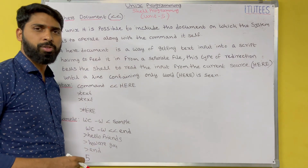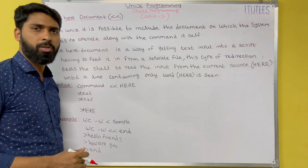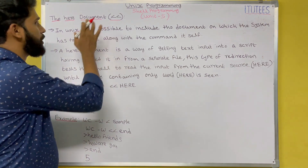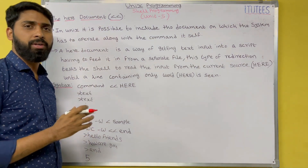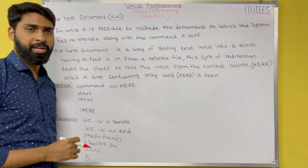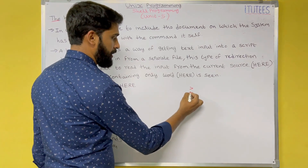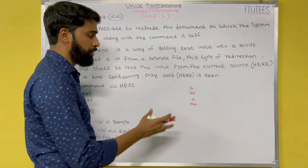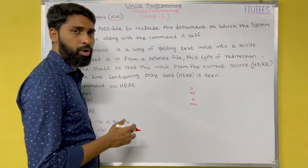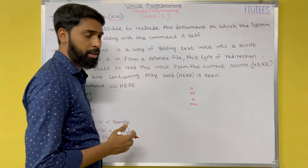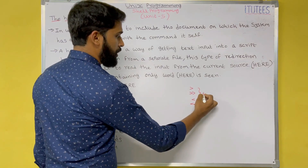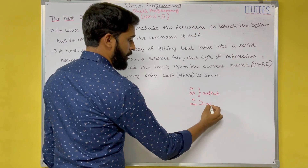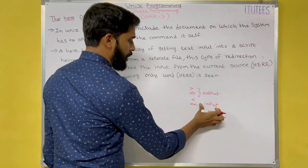Hello friends, welcome to Unix programming tutorials. In this class we are going to learn about here document. We have different types of redirection operators: greater than, double greater than, less than, double less than. We already discussed these redirection operators in our earlier classes. These two are the output redirection operators and these two are the input redirection operators.